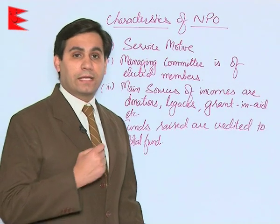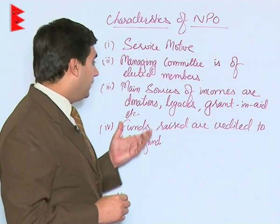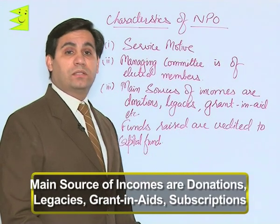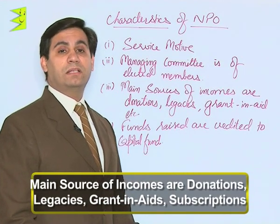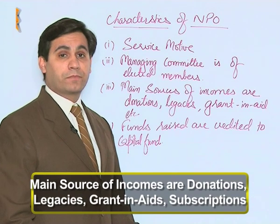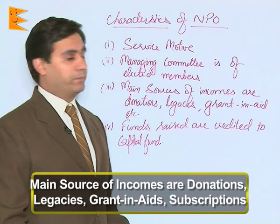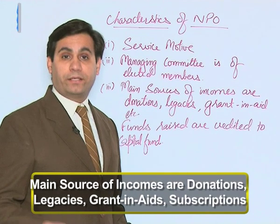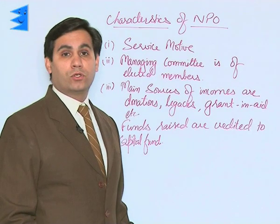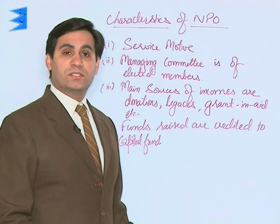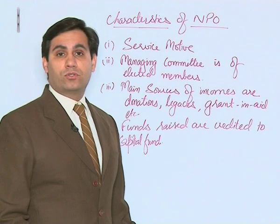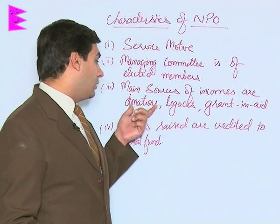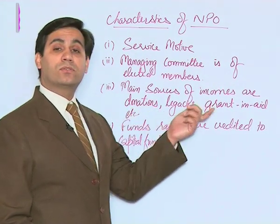The major sources of income for an NPO — remember, they do not indulge in any trading or manufacturing activity as such. So the major sources of income are donations. People donate, like when you go to hospitals, orphanages, or certain religious institutions. People also donate out of their wills, so donations are a major source of income.